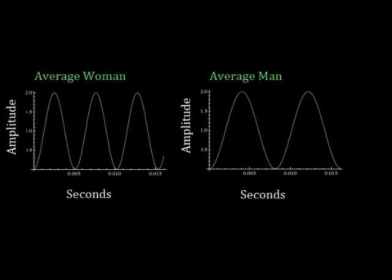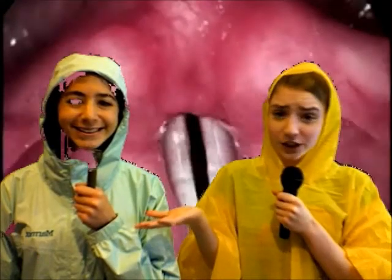Take a look at these two graphs. The graph on the left shows the change in amplitude of vibration for the average woman. The graph on the right shows the change in amplitude of vibration for the average man. As you know, the pitch of a woman's voice tends to be higher than that of a man. These graphs show that the higher the fundamental frequency is, the faster the vocal folds cycle is. Therefore, the faster the vocal folds vibrate, the higher the pitch of the voice will be.